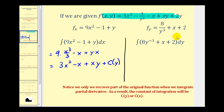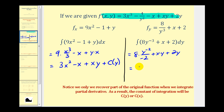Treating x as a constant, we'd have 8 times y to the negative 2 divided by negative 2, plus x times y, plus 2y. Simplifying, this gives negative 4 over y squared plus xy plus 2y. Comparing this to the original function, notice we're missing some of the x terms. So our constant of integration will be c of x.